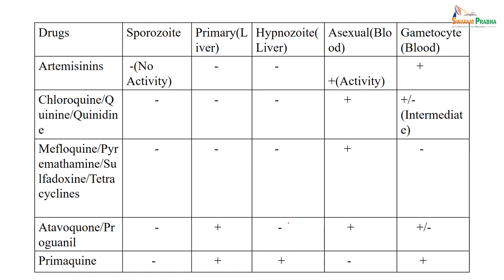Comparing different drug groups and their effect on sporozoites, primary liver stage, hypnozoites, asexual blood stage, or gametocytes: artemisinin has no activity on sporozoites, primary liver stage, or hypnozoites, but is effective in the asexual phase and has positive effect on gametocytes. Chloroquine, quinine, and quinidine are effective in the asexual blood stage and gametocytes. Mefloquine is effective in the asexual stage; atovaquone has effect on primary liver stage, asexual stage, and gametocytes. Primaquine, used for radical treatment, is effective on primary liver, hypnozoites, and gametocytes.